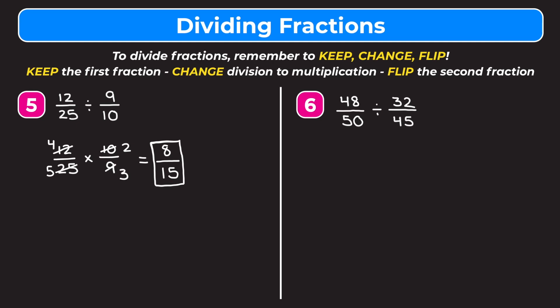The last example is forty-eight fiftieths divided by thirty-two forty-fifths. Keep forty-eight fiftieths, change division to multiplication, flip the second fraction to become forty-five over thirty-two. Cross-reducing: divide forty-eight and thirty-two both by eight — forty-eight divided by eight is six, thirty-two divided by eight is four. Divide fifty and forty-five both by five — fifty divided by five is ten, forty-five divided by five is nine.